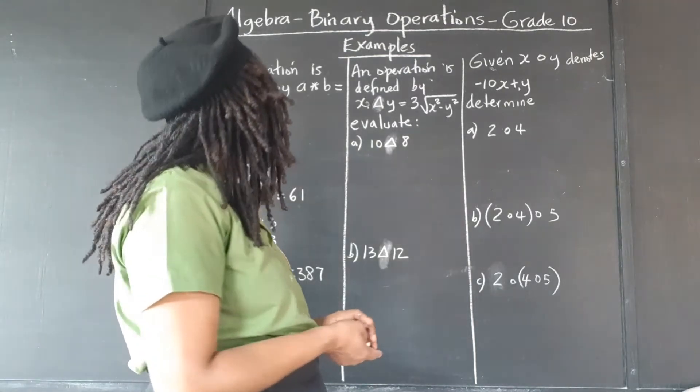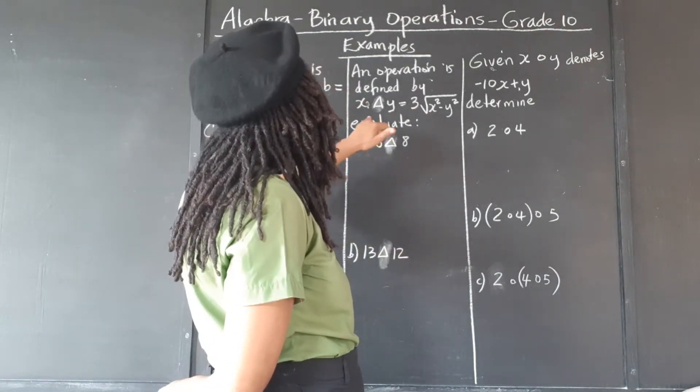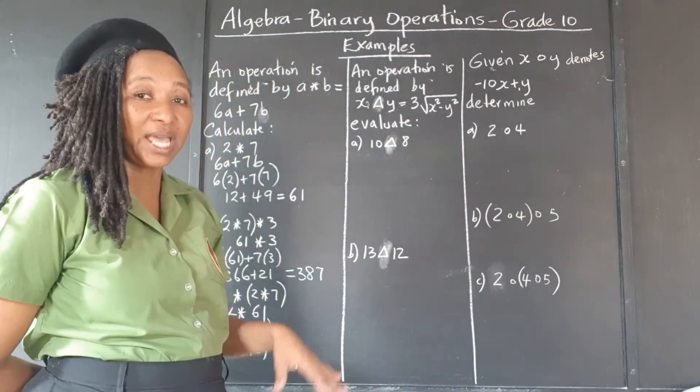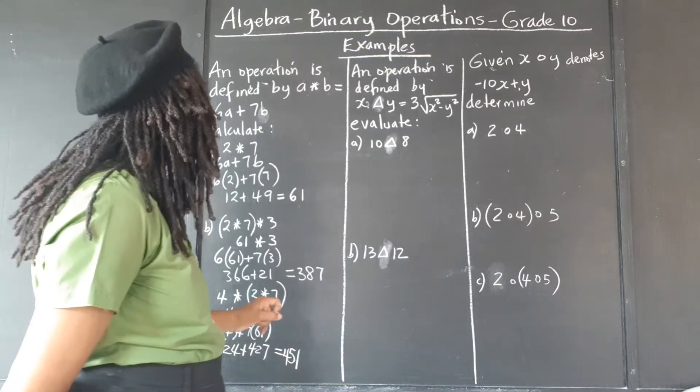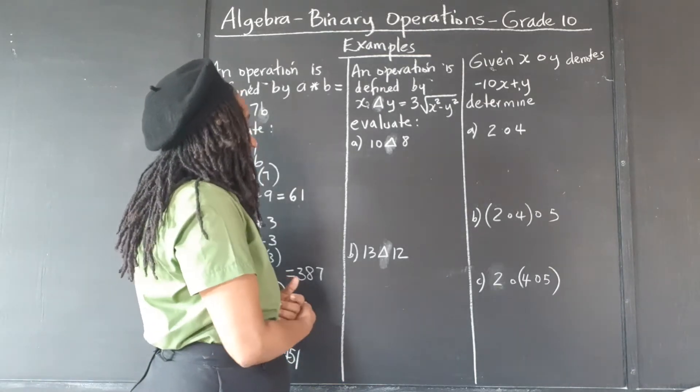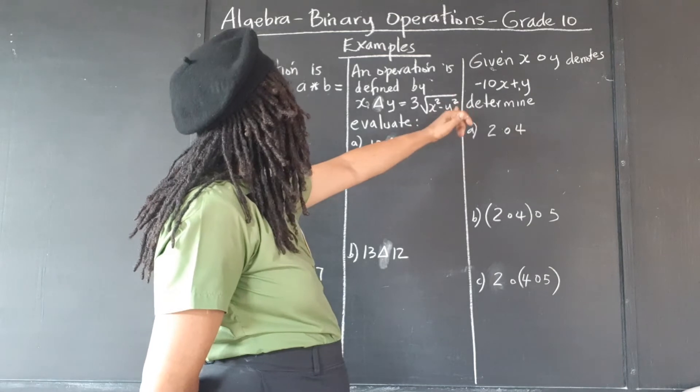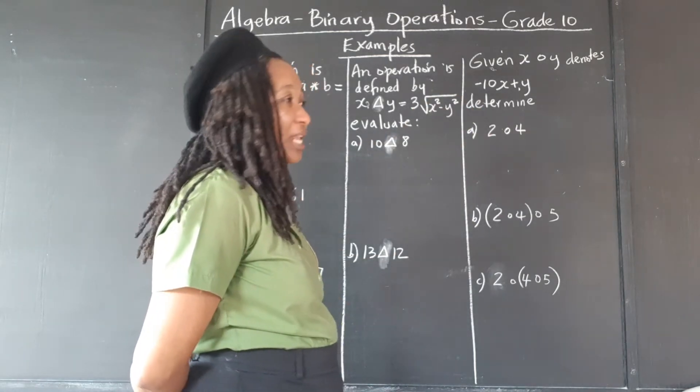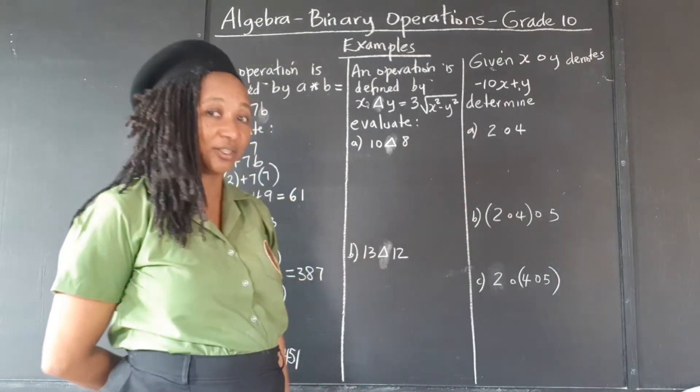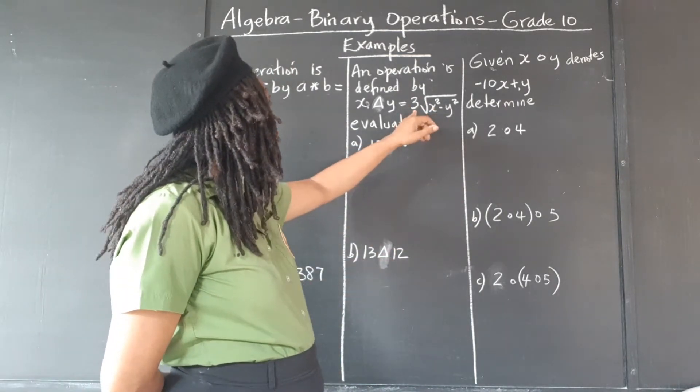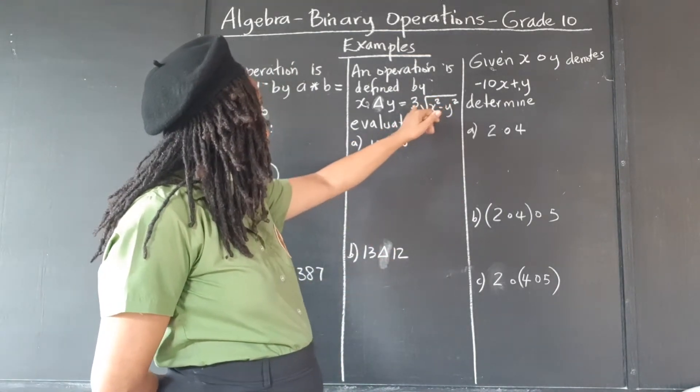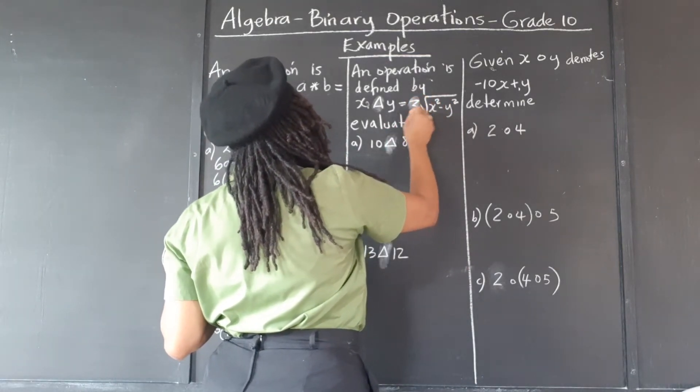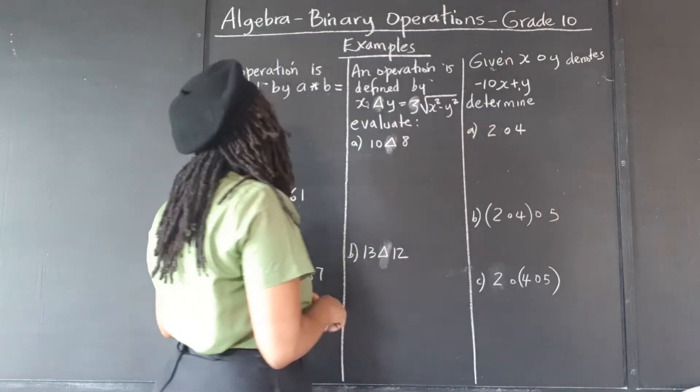Alright, so here we have another binary operation. This time, the operation is represented by a triangle. Like I said, we can use any symbol to represent the operation. And they're telling us to square x, square y, subtract them, and find the square root. This should be familiar to you, that is Pythagoras' theorem. Finally, we're going to multiply those terms by 3. So the 3 is not cube root, it's a big 3 times, right?